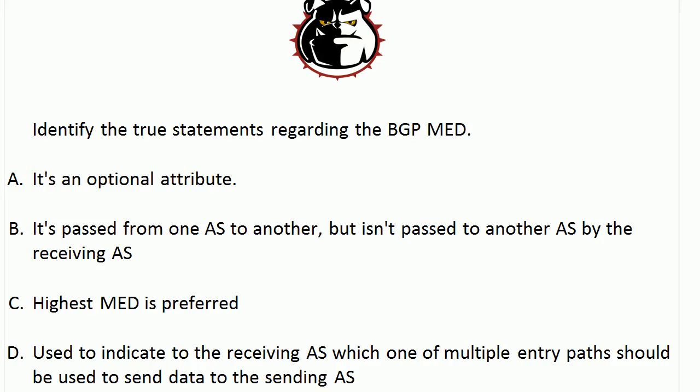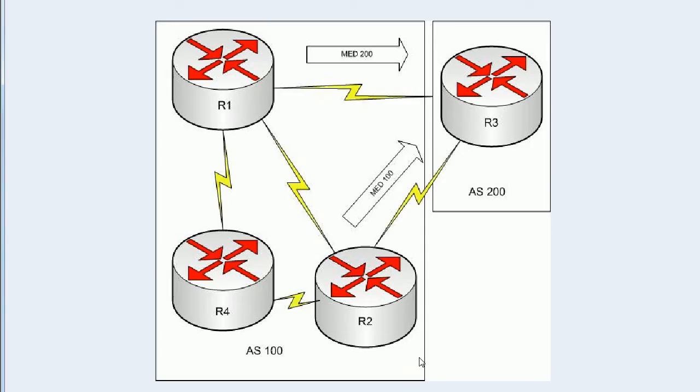Now let's talk about this BGP Med for a few minutes. First off, we have to know which of our attributes are mandatory and which ones are optional. The Med is definitely optional, and you'll see why in a moment. Choice B — it's passed from one AS to another but isn't passed to another AS by the receiving AS — that's actually true. Let's take a look at this illustration.